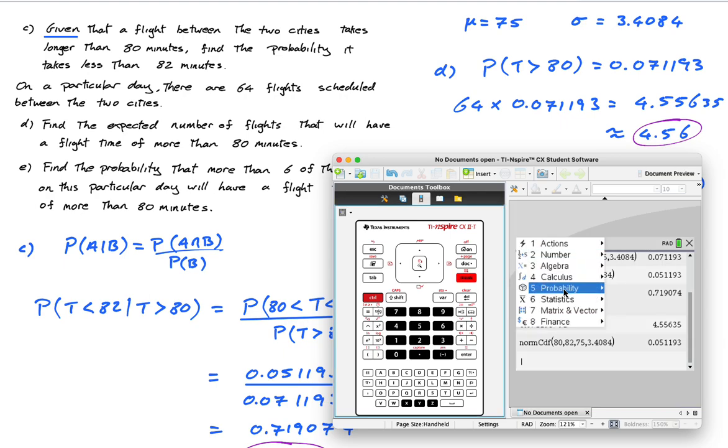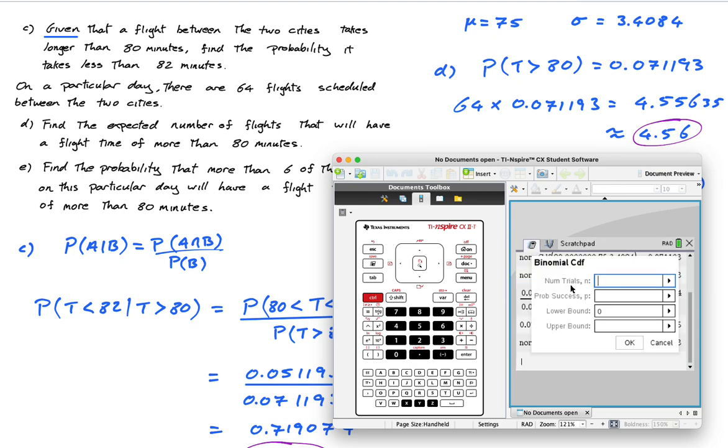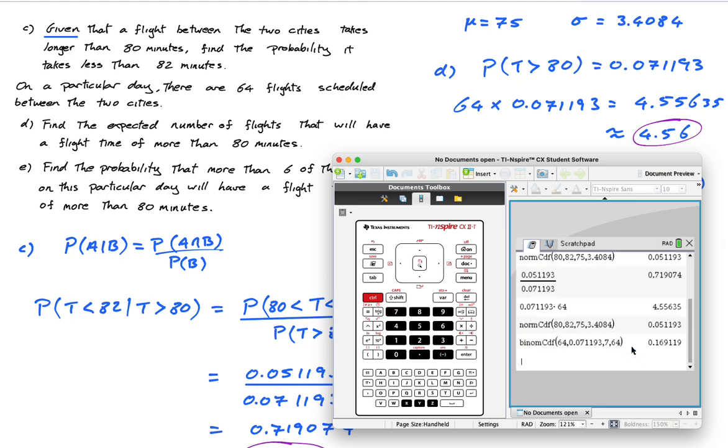We go to menu, probability distributions, binomial CDF. The number of trials is 64 because there's 64 flights. The probability of success is 0.071193. The lower bound, be careful, is 7 because the question says more than 6. I have to put 7 because it's a binomial distribution. The upper bound will be 64.